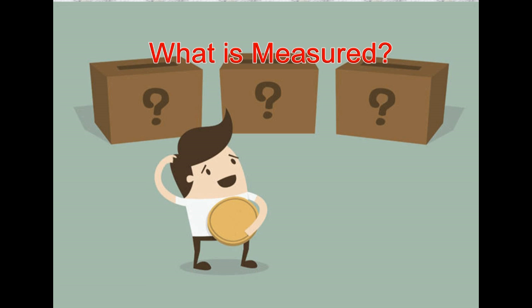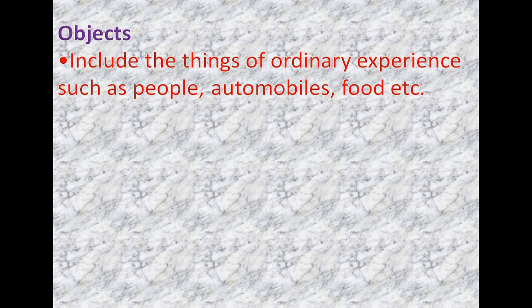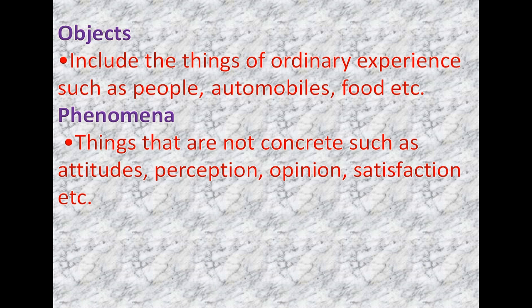What is measured? The concepts used in research may be classified as objects, phenomena, and properties. Objects include the things of ordinary experience such as people, automobiles, food, etc. Phenomena are things that are not concrete, such as attitudes, perception, opinion, and satisfaction.